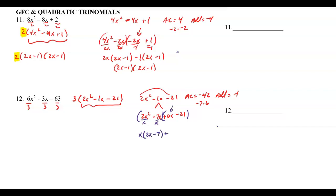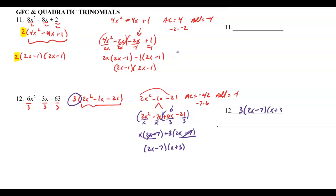For the second group, that's positive, so I factor out a positive 3, since 6 and 21 are both divisible by 3. Dividing by 3 gives 2x minus 7, which matches the first group. I pull out the binomial 2x minus 7, and what's left is x plus 3. My final answer includes the GCF of 3, giving 3 times (2x minus 7) times (x plus 3). Go ahead, try the student practice and let us know if you have any questions.